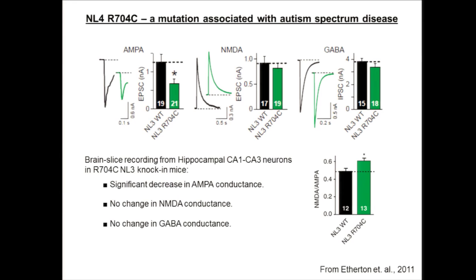What Etherton et al. found was a very specific synaptic effect: three major neurotransmitter systems — AMPA and NMDA-mediated excitatory synaptic transmission, and GABA-mediated inhibitory transmission. GABA and NMDA synaptic transmission was perfectly intact with no changes whatsoever. However, the AMPA receptor-mediated component was about half the amplitude compared to control.